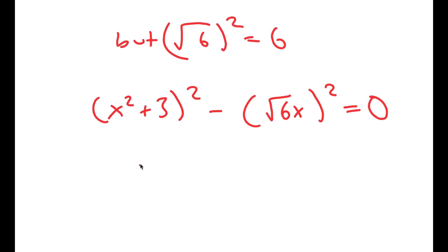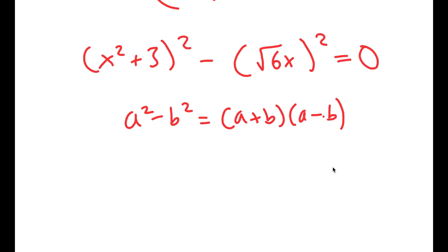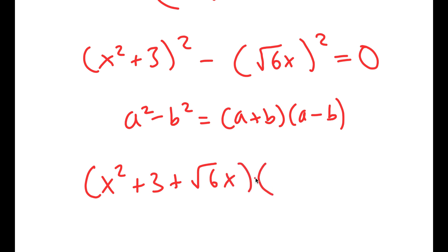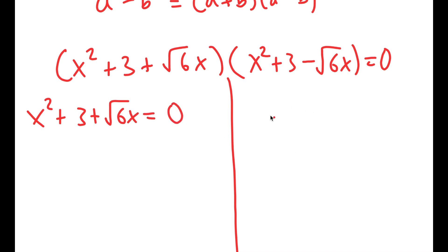So now I have something squared minus another thing squared, meaning I can use the property that a squared minus b squared is equal to a plus b times a minus b. In this case, a is equal to x squared plus 3 and b is equal to the square root of 6 times x. So this is going to be x squared plus 3 plus the square root of 6x, times x squared plus 3 minus the square root of 6x, which equals 0. So now I get two equations: x squared plus 3 plus the square root of 6x equals 0, and x squared plus 3 minus the square root of 6x equals 0.